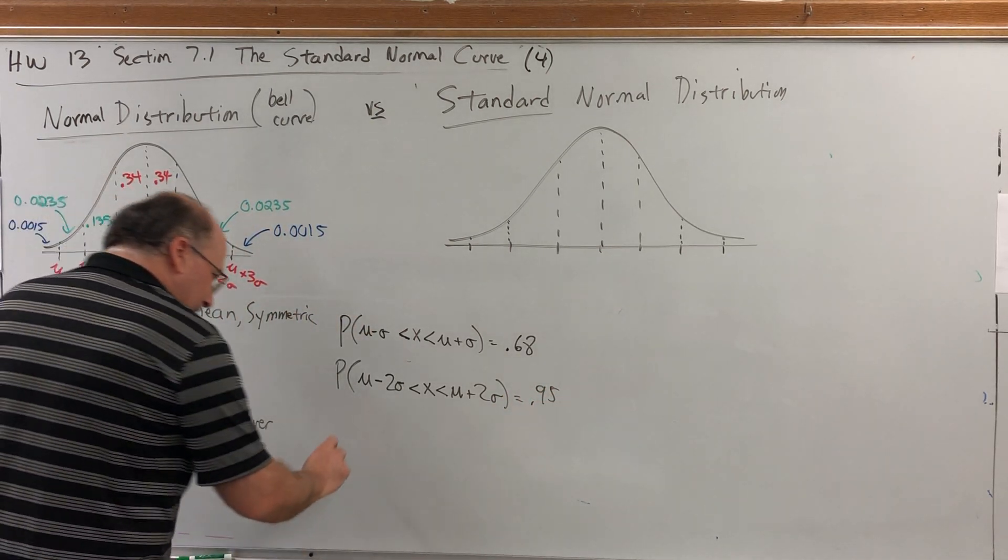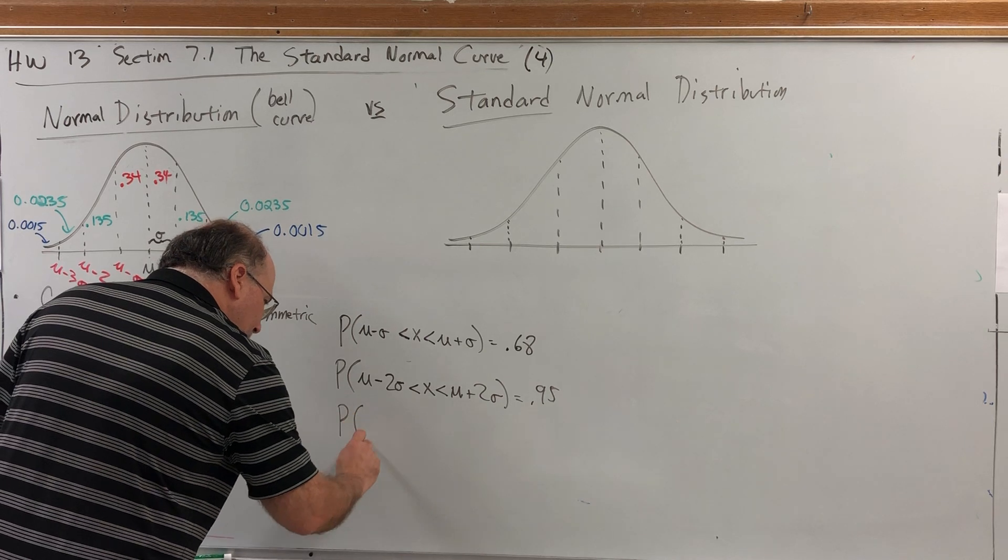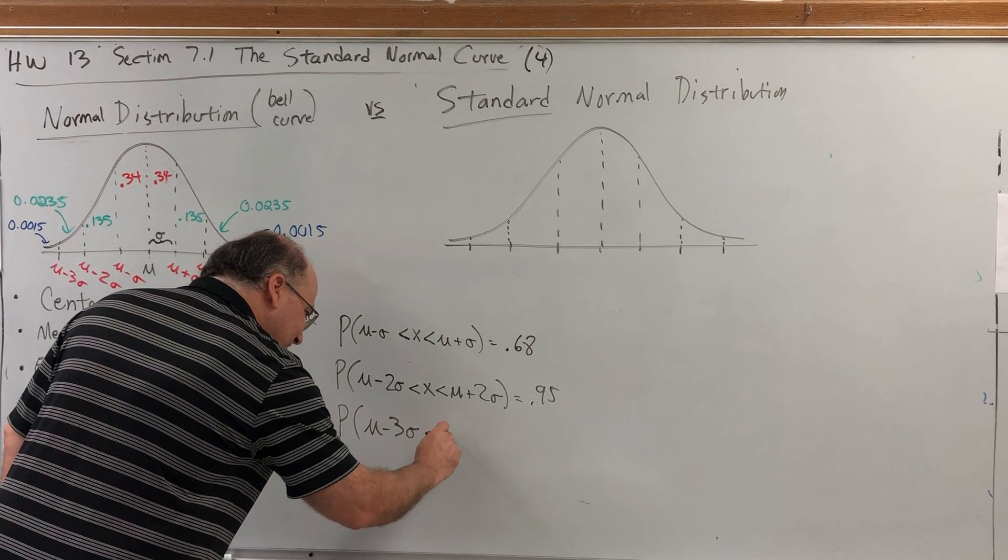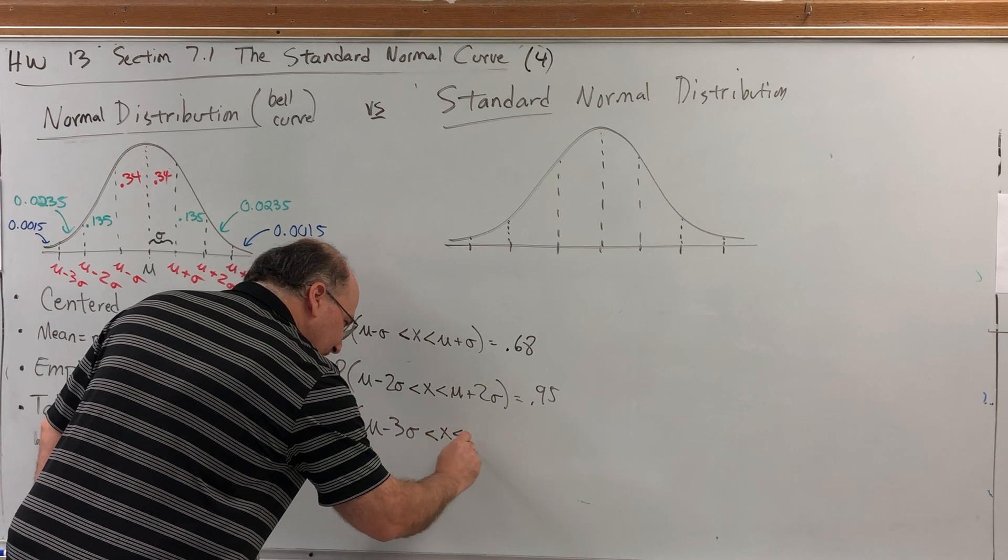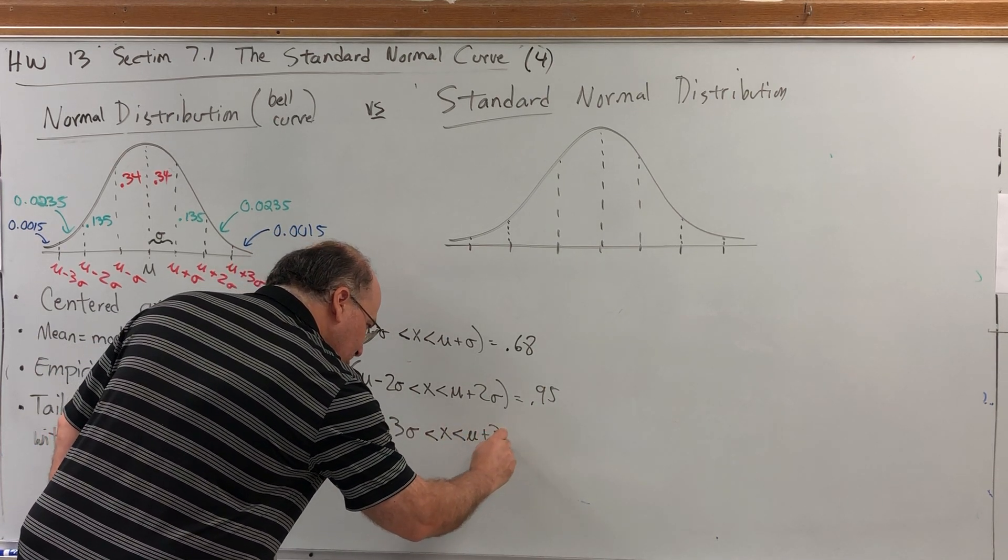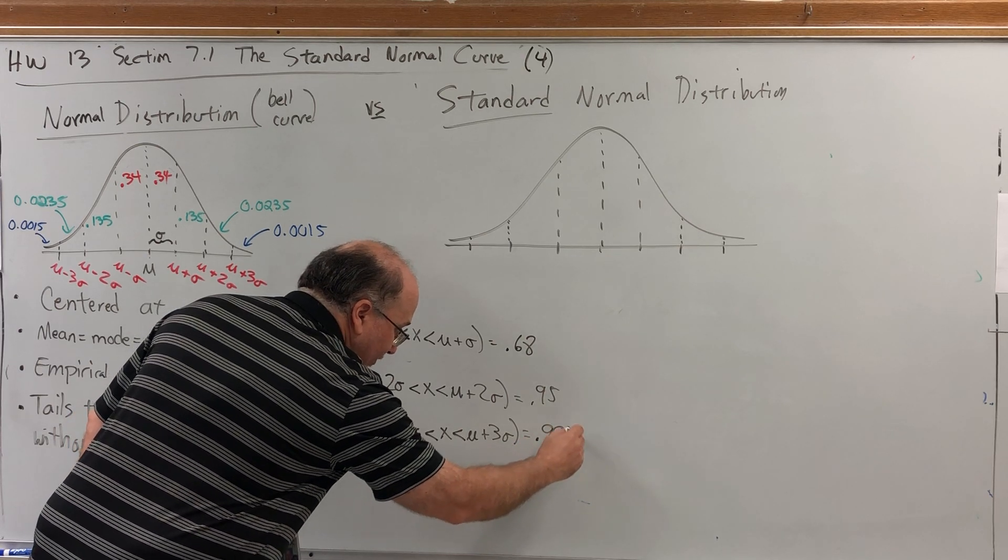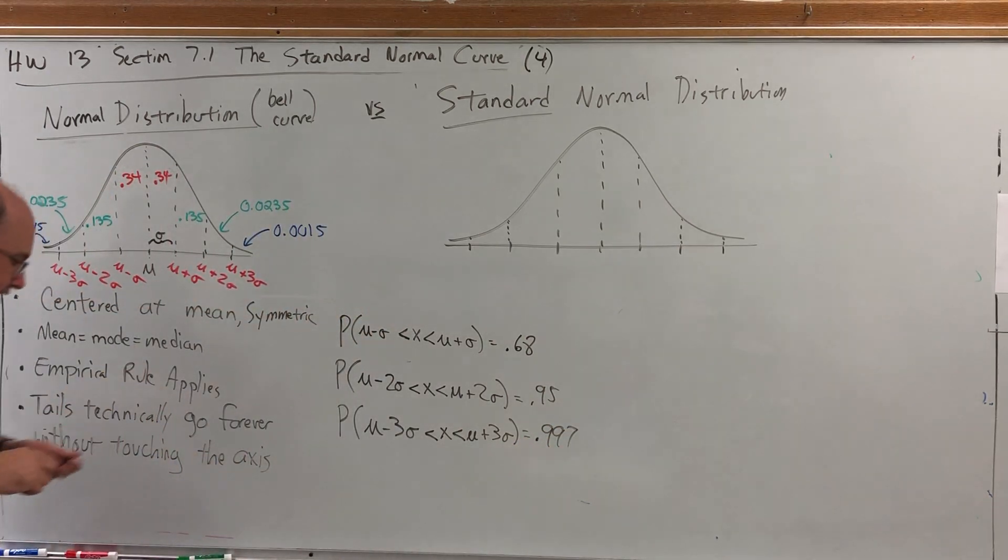And for three standard deviations, the probability that mu minus 3 sigma is less than x, which is less than mu plus 3 sigma, is equal to 0.997. So that's the empirical rule stated in terms of probability.